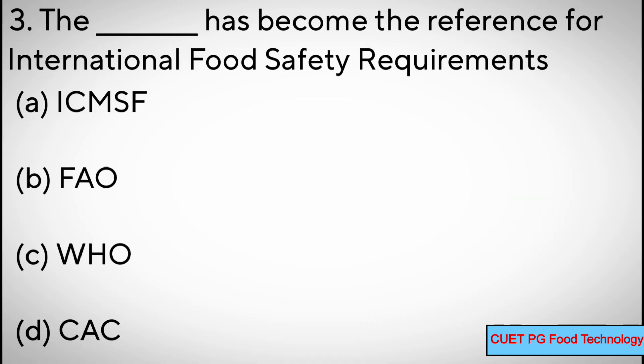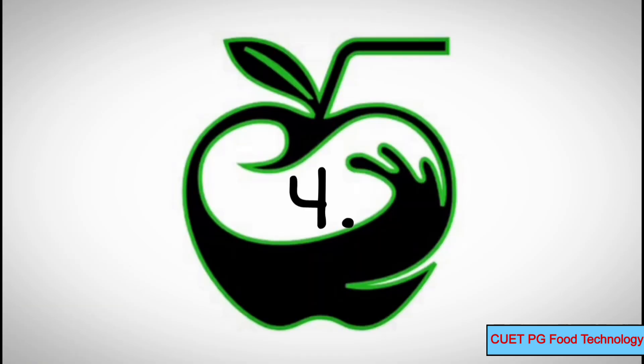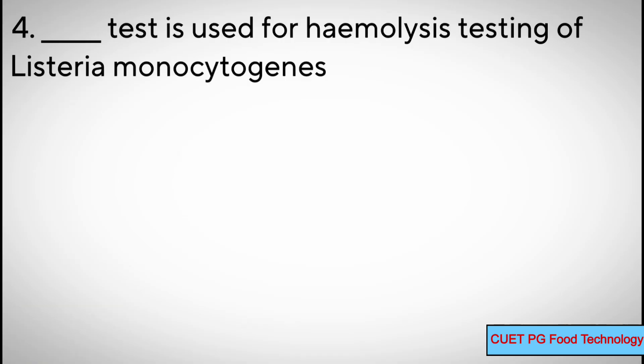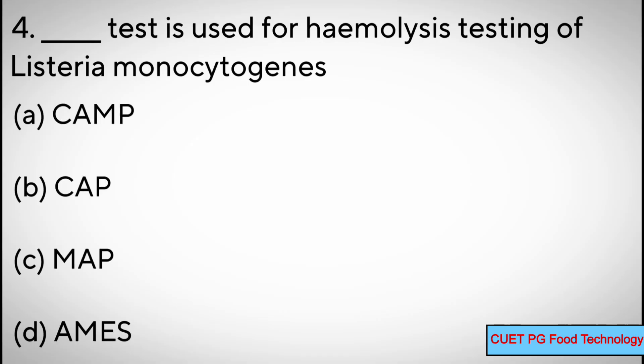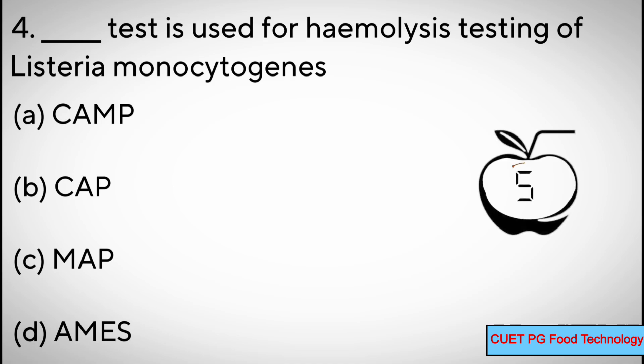Question number four: dash test is used for hemolysis testing of Listeria monocytogenes — options: A) CAMP, B) CAP, C) MAP, D) Ames. Correct answer: A) CAMP.